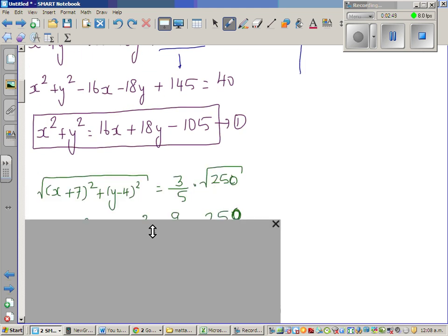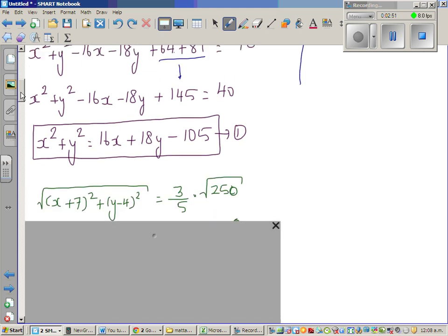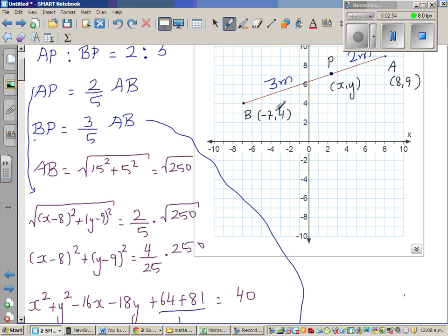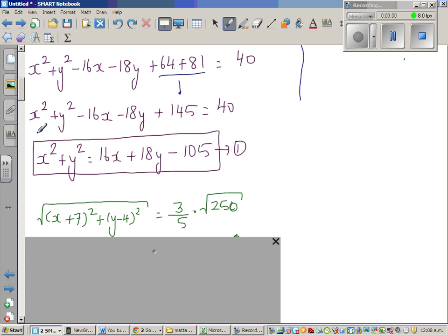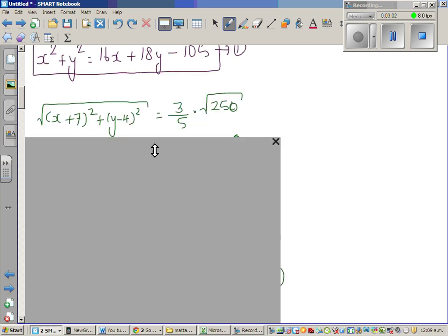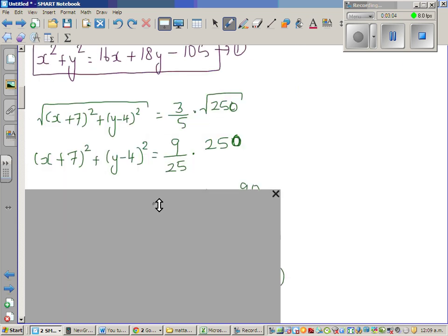So BP is the distance from B to P, which is x take away negative 7, which is x plus 7, and y take away 4 squared. The same principle, squaring both sides, you get this. Again, square of 3 is 9, and square of 5 is 25. So 25 goes in 50, 10 times, and that's how I get this step.